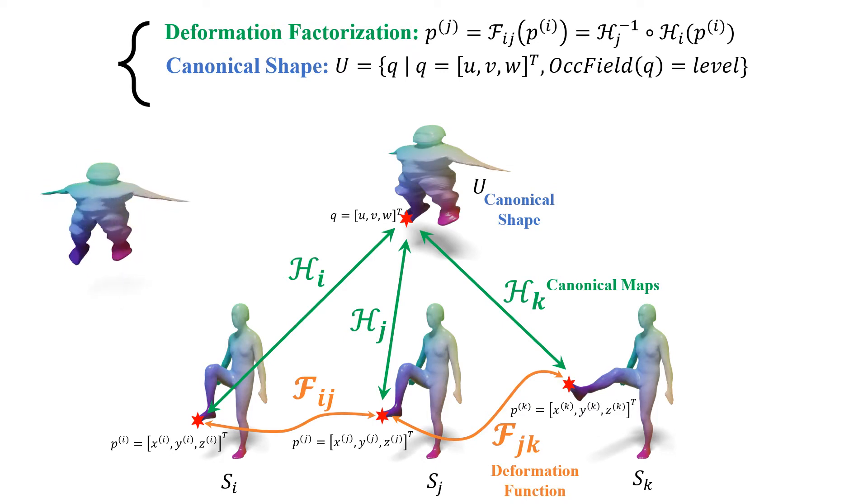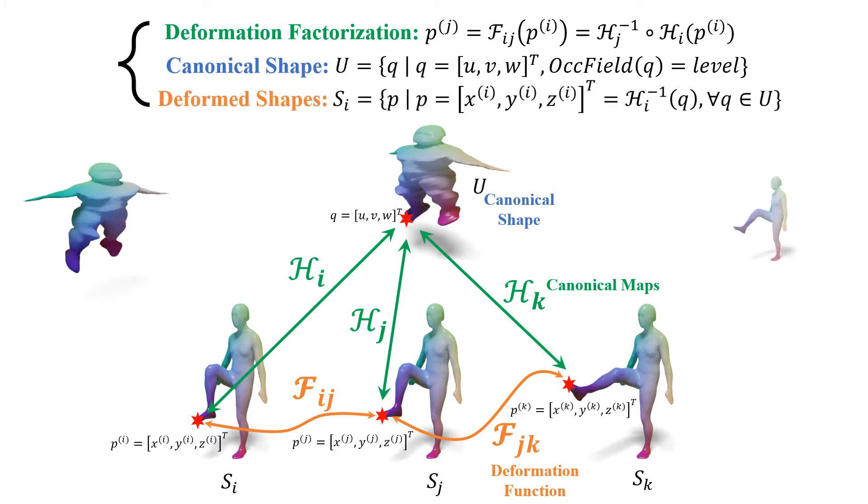Since the canonical maps are learnable, the induced canonical space and canonical shape are also learnable. Finally, each deformed surface can be immediately obtained through the inverse of the corresponding canonical map.